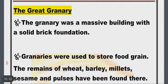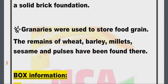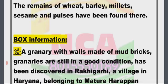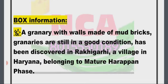The Great Granary was a massive building with a solid brick foundation, used to store food grain. Remains of wheat, barley, millet, sesame, and pulses have been found there. Box information: A granary with walls made of mud bricks, still in good condition, has been discovered in Rakhigarhi, a village in Haryana, belonging to the mature Harappan phase.